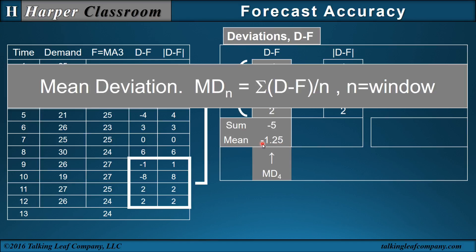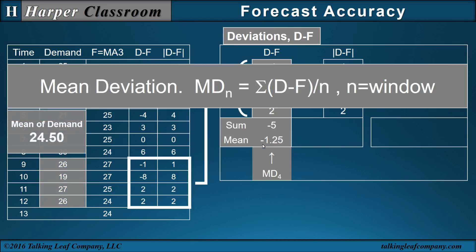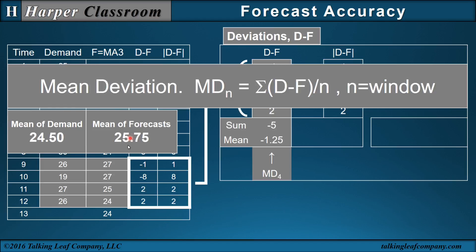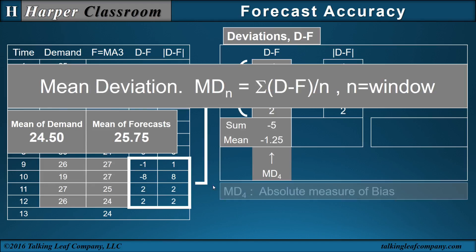Let's interpret this. Notice there's a minus sign. If I take the mean of our demand in our window — 24.5 — and compare that with the mean of our forecast in the window — 25.75 — notice our forecasts are greater than our demand. Since our forecasts are greater than our demand, that's where the mean is negative. When we have an average of our estimates greater than the observed values, that's referred to as bias. So the mean deviation is the absolute measure of the bias of our forecasts.